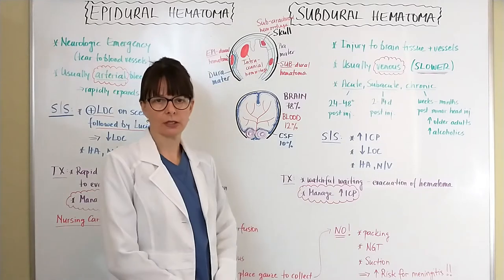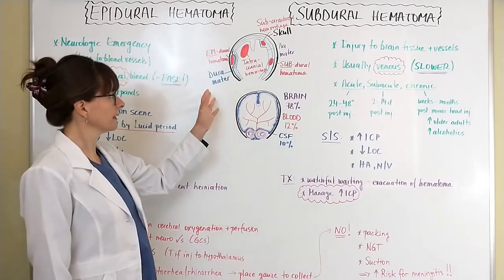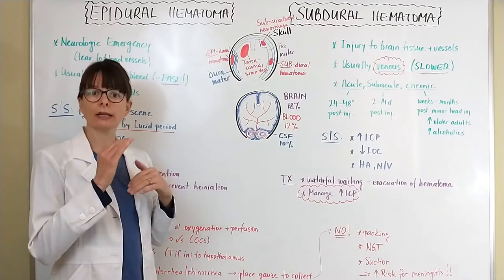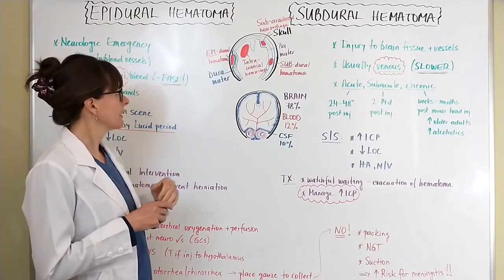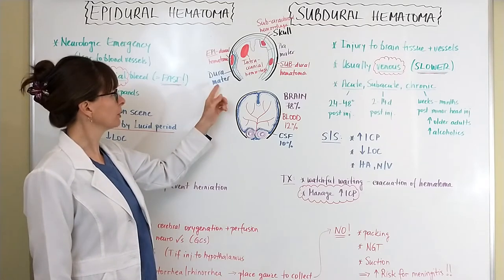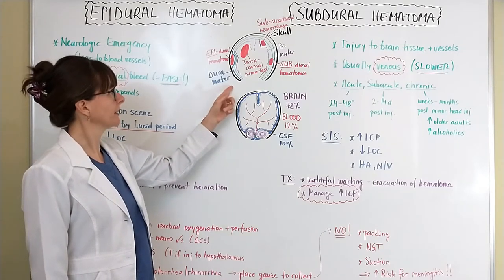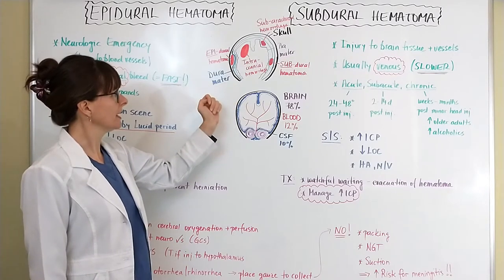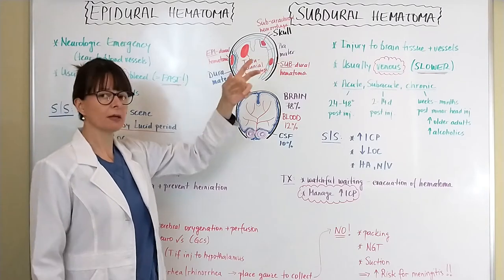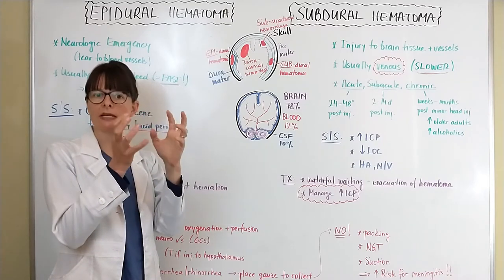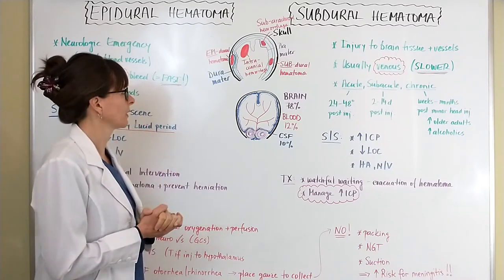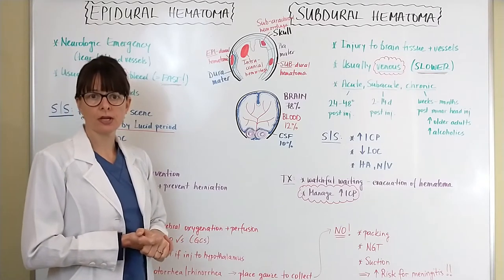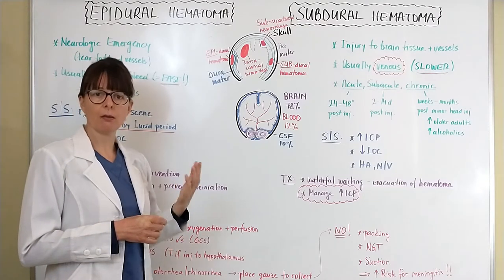Let's review the anatomy. We have the head protected by our skull, and inside there are several layers designed to protect the brain. The first layer underneath, shown in blue, is the dura mater, then underneath that we have the subarachnoid membrane, and below that we have the pia mater, which lines the immediate surface of the brain.